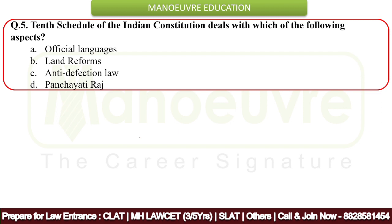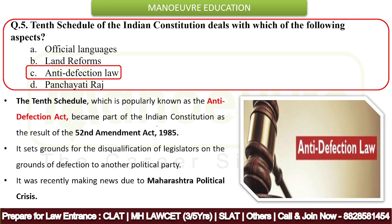Next question: the 10th Schedule of the Indian Constitution deals with which aspect? The correct answer is the anti-defection law — it was recently in the news. The 10th Schedule, popularly known as the Anti-Defection Act, became part of the Indian Constitution as a result of the 52nd Amendment Act of 1985. It sets grounds for the disqualification of legislators on grounds of defection to another political party. It was recently in the news due to the Maharashtra political crisis.